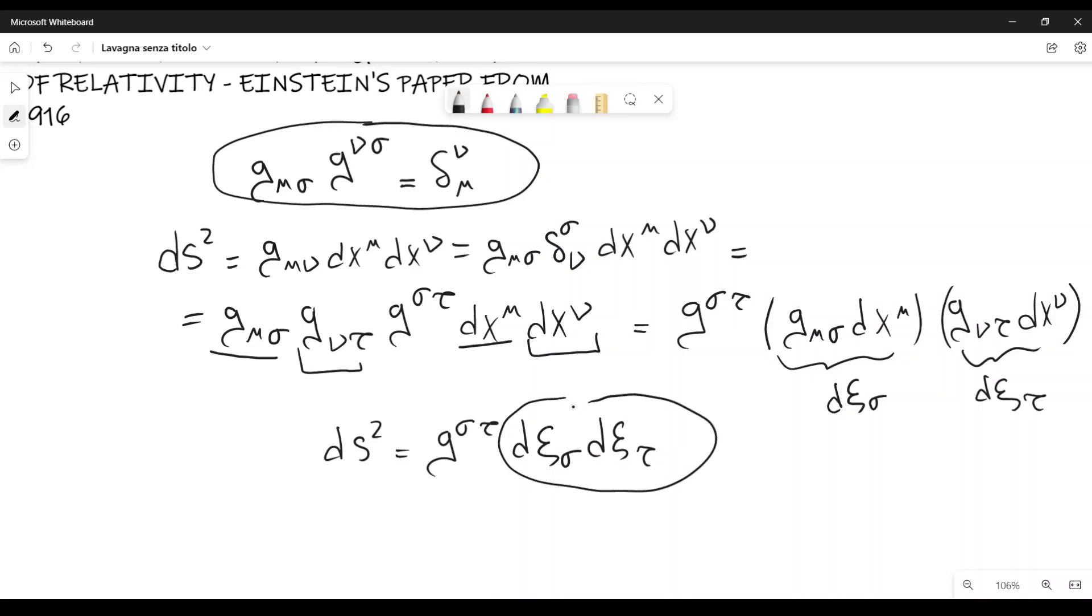Here we have two tensors, and we have another tensor here, ds squared. It is a tensor, zero rank tensor, it's a scalar. And therefore, what's left here should also be a tensor,